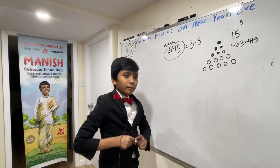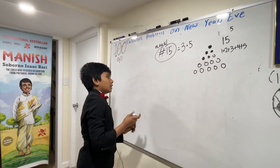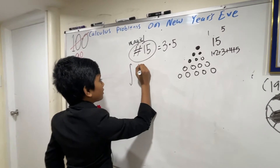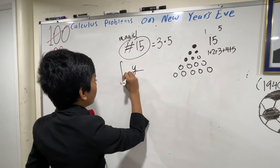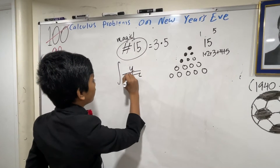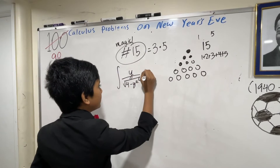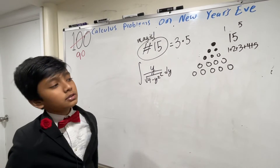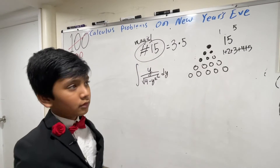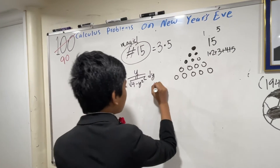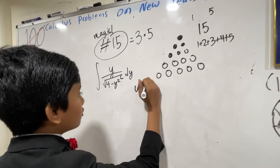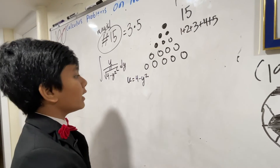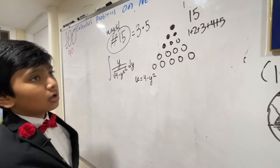Enough about all that — let's start the problem. We have the integral of y over the square root of four minus y squared, dy. This is another use of u-substitution. So u is equal to four minus y squared.